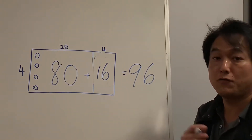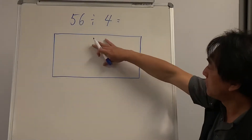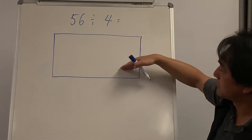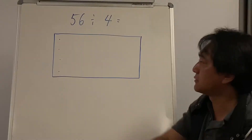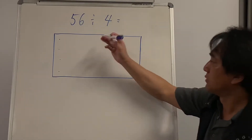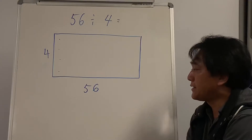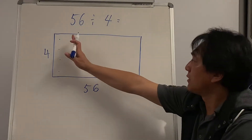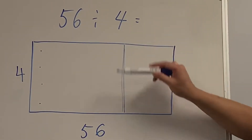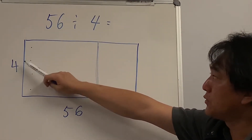So imagine there are 56 cupcakes on this tray and I'm going to make four rows of cupcakes — one, two, three, four. I'm going to find out how many columns of fours I can make. Remember, there are 56 cupcakes altogether. The first thing we need to do is cut this into tens and ones.